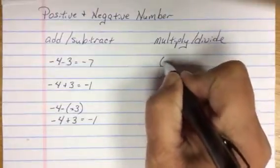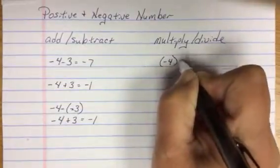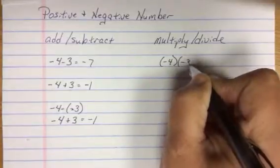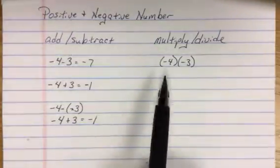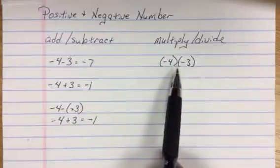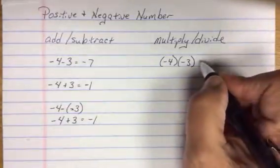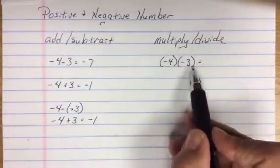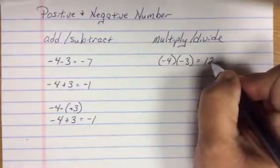So if I have negative 4 times negative 3, my signs are the same, so my answer is positive. So 4 times 3 is 12.